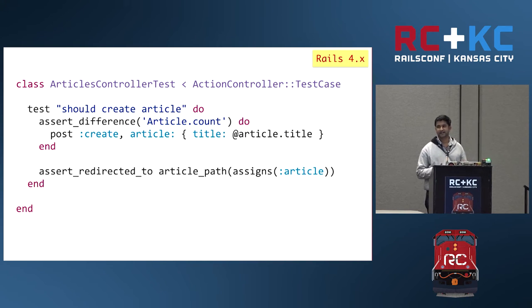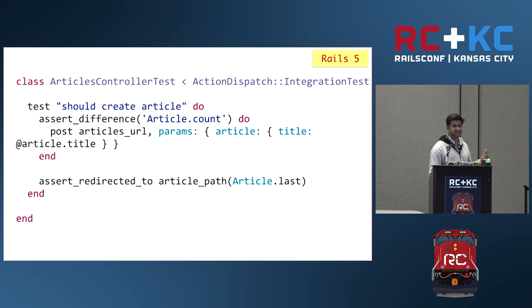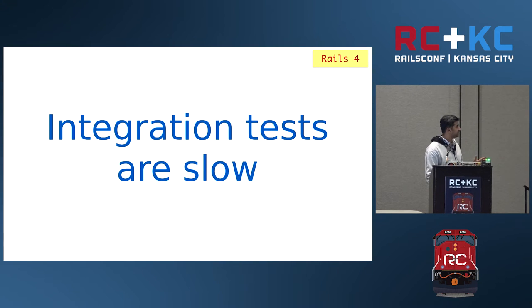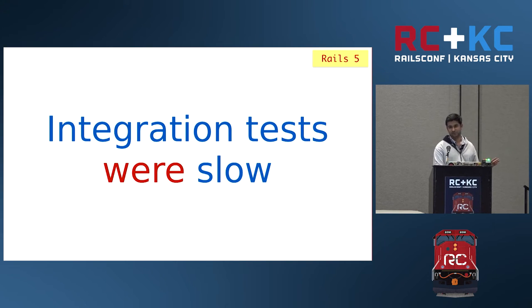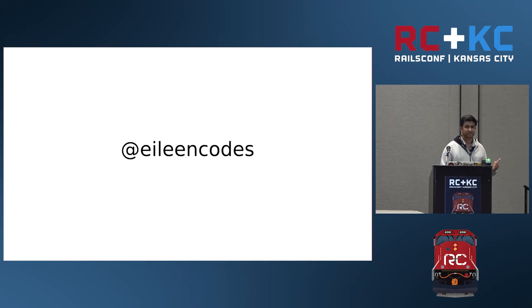Why was this change made? If we compare the test case from Rails 4 and Rails 5, they almost look the same — we're testing that an article gets created and we get redirected. The difference is the mechanism we use to test it. Integration tests are now comparatively as fast as functional controller tests — this is due to the work of Eileen, who worked a lot on integration tests in the last year. So if you consider speed, there's no significant difference between a functional controller test and an integration test.